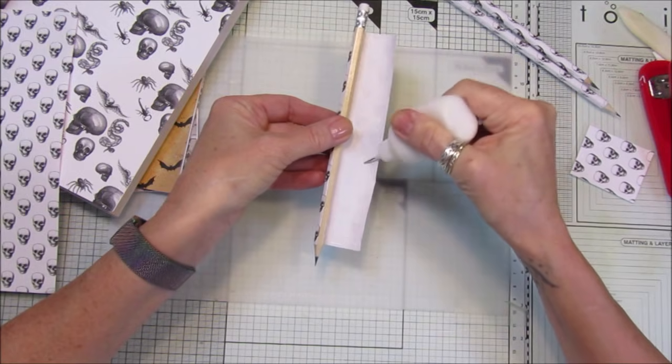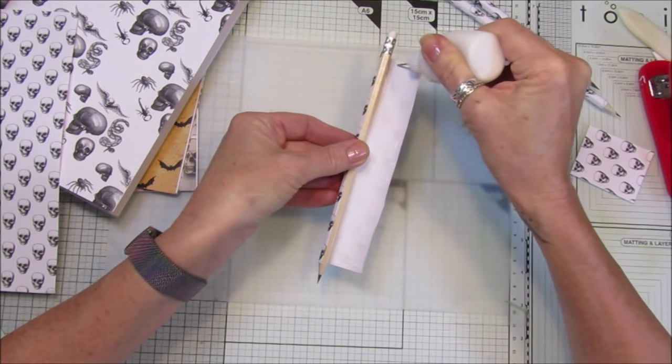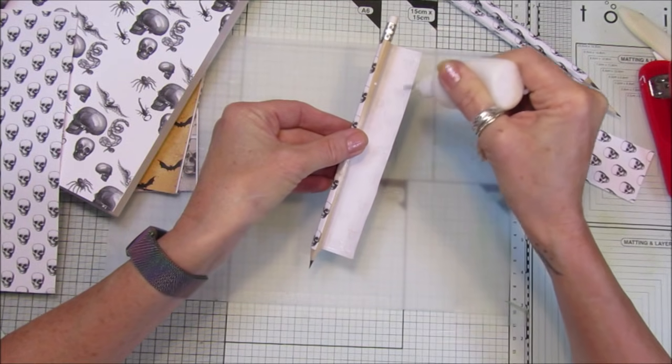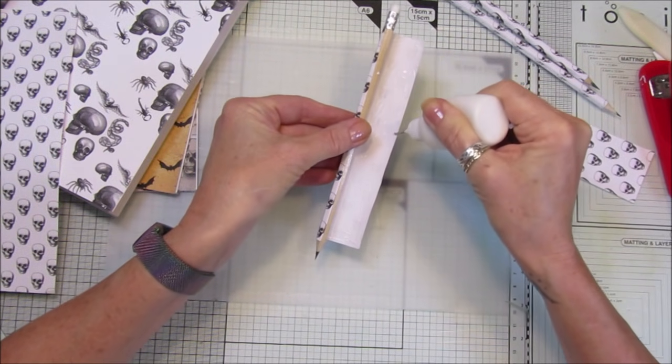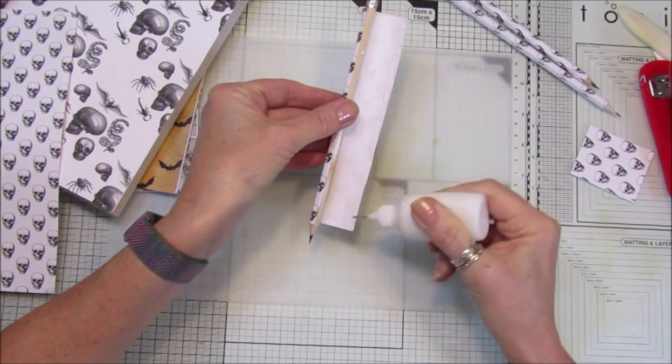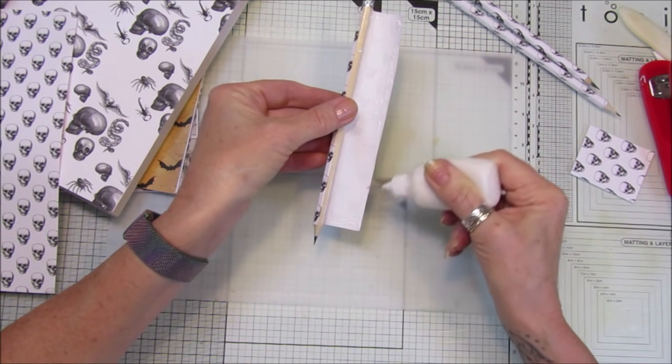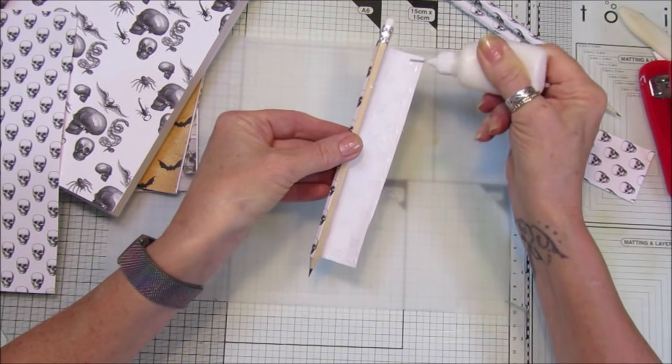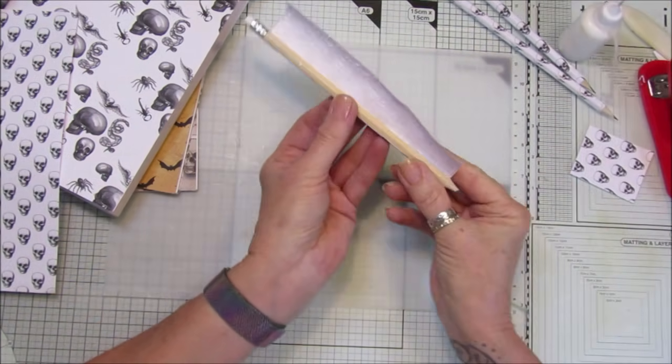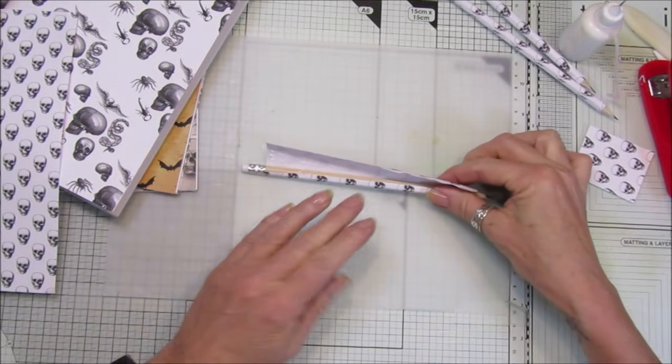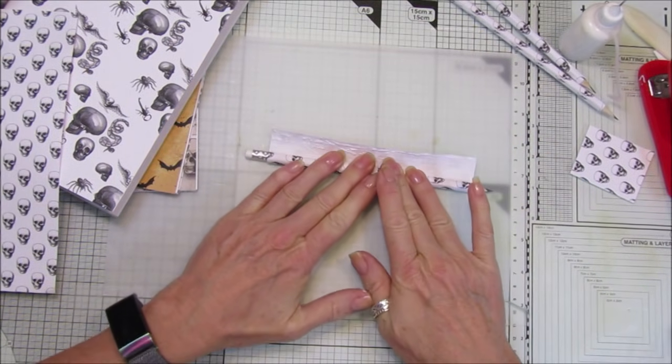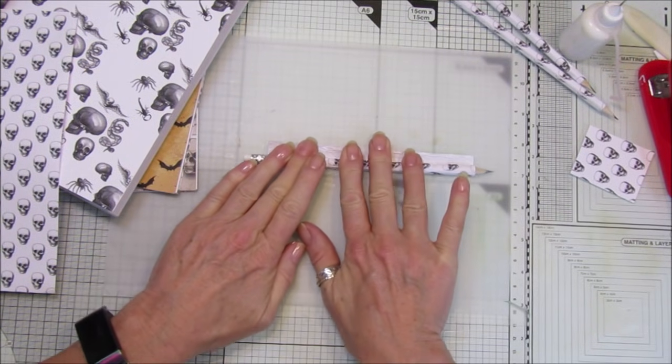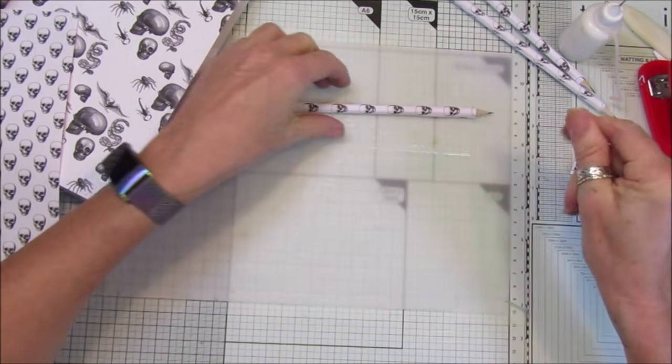I'm just using tacky glue on here because it's just paper and this is wood, so it sticks really well. Make sure you've got a nice lot on there, right up to this edge here so you don't have a little gap. Pop that on and then all I'm going to do again is roll that. Make sure you pull it tight and then just roll it like that.